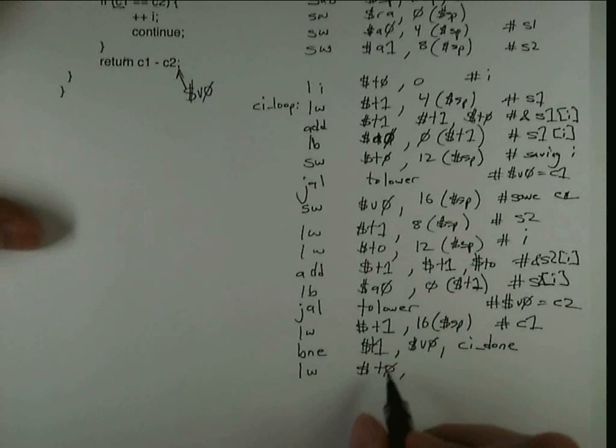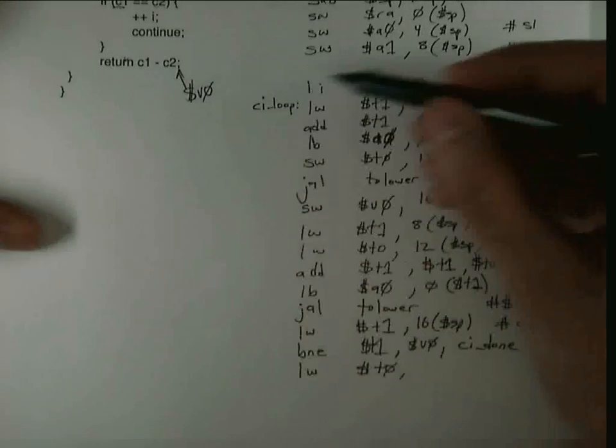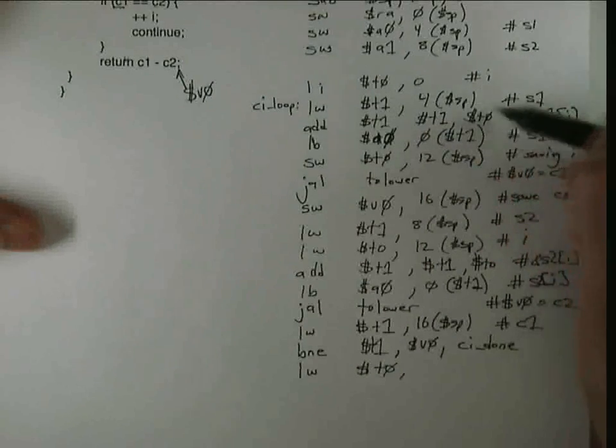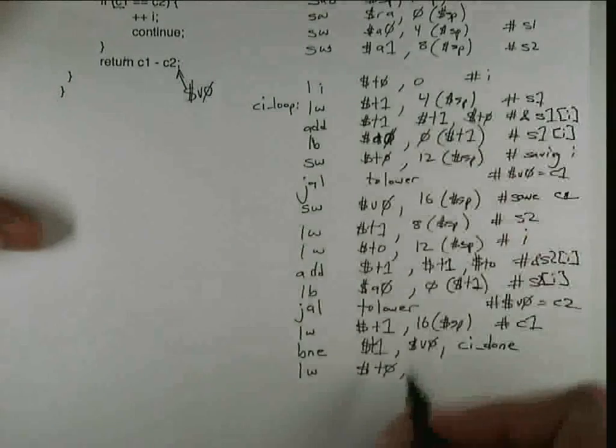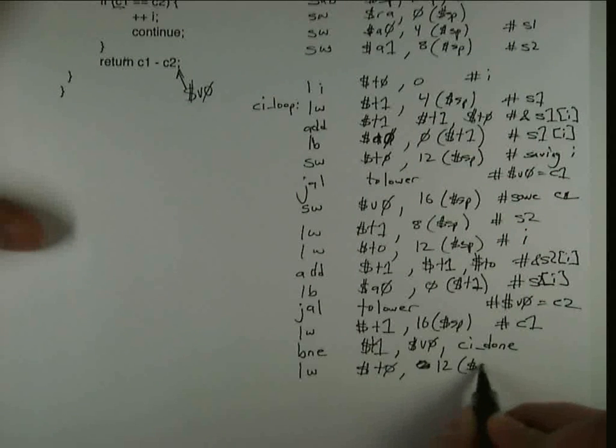And the reason why I'm putting it into T0 in particular is because that way if I leave it there, when it comes around the loop again, this code can expect it to be in T0. So I'm going to load this off. I put I in the 12 offset of the stack pointer.